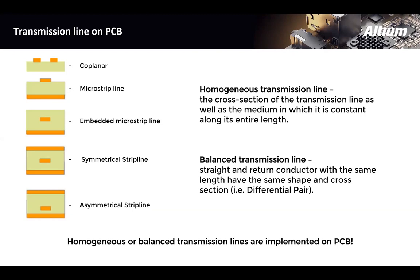Again, it's an important concept. We want to use these homogeneous transmission lines where the cross section is identical across the length. That's what really allows us to get all of this in balance. Now we mention here a balanced transmission line is where you have a straight and a return conductor with the same length. They have the same shape and cross section. An example of that is a differential pair. And of course, we run into both of these implemented on PCBs.